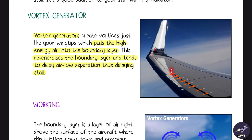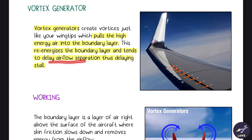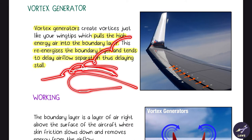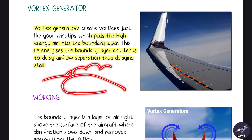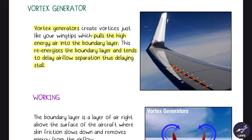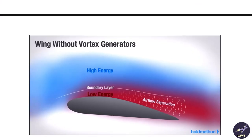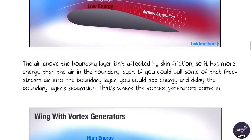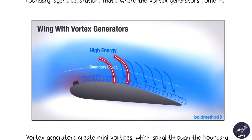Next are vortex generators. These create small vortices that re-energize the boundary layer and delay airflow separation, thus delaying the stall. Stall happens because the airflow separates at the leading edge leaving no airflow above the wing. By re-energizing the boundary layer — introducing energy into it — the stall can be delayed beyond 16 degrees. Without vortex generators, there is very low energy in the boundary layer and airflow separates; with vortex generators, high energy is reintroduced and stall is delayed.